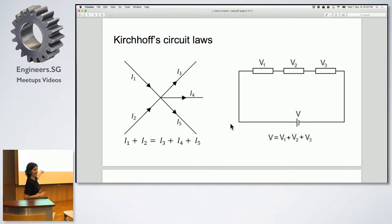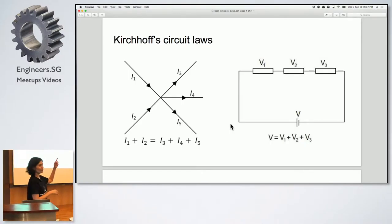Who can say what's the current law? All the current flowing into a node is equal to the current that's going out. Yeah, all the current in is all the current out. And what about voltage? Voltage is kind of similar, but the voltage drop should equal to the voltage gain. Or rather, in this case, the battery is equal to the three voltage loads. That's a good question.